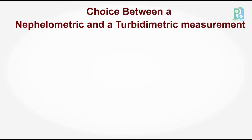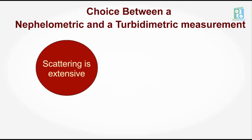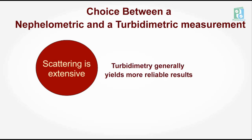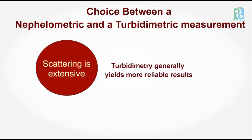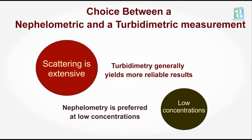The choice between a nephelometric and turbidimetric measurement depends upon the fraction of light scattered. When scattering is extensive owing to the presence of many particles, turbidimetry generally yields more reliable results. Nephelometry is preferred at low concentration because a small scattered intensity against a black background is easier to measure than a small change in intensity of intense transmitted radiation.